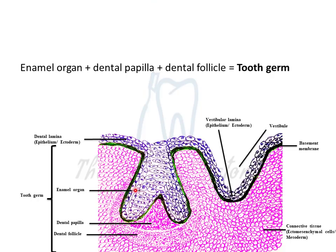The three parts — enamel organ, dental papilla, and dental follicle — are collectively referred to as the tooth germ, because each developing tooth has these three parts. If we have 32 teeth developing, all 32 will have these three parts: the enamel organ, dental papilla, and dental follicle.